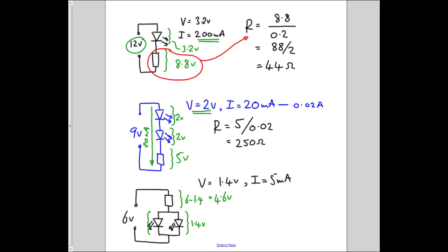And the current through each of my LEDs is 5 milliamps. But all of that current has to go through the resistor. So the current through the resistor is 10 milliamps. And therefore, my resistor equation becomes R equals 4.6 divided by 10 milliamps, which is 0.01 amps.